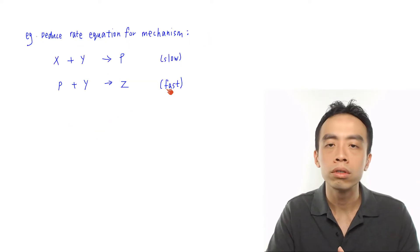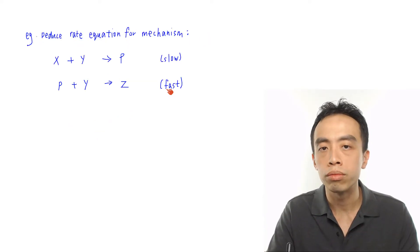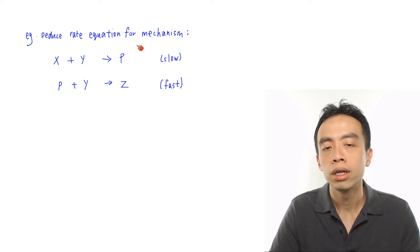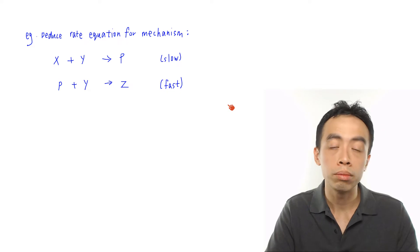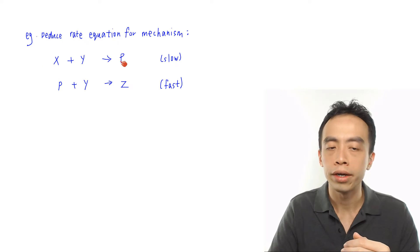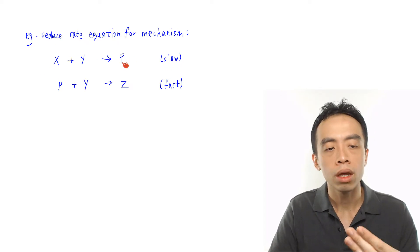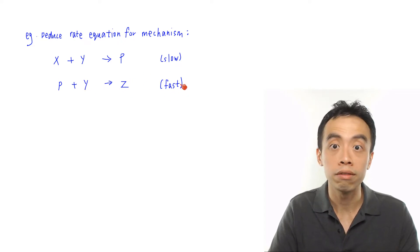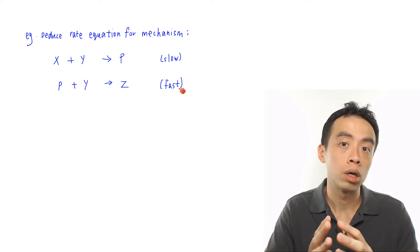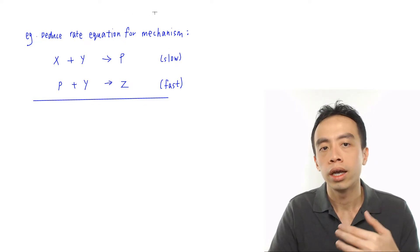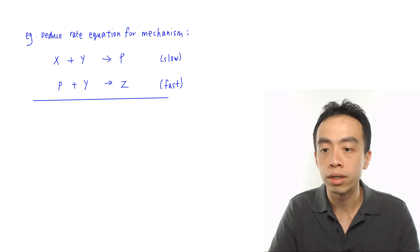Let's have two examples to illustrate the relationship between the rate equation and the reaction mechanism. Given the mechanism for this particular reaction, we want to determine the rate equation based on this mechanism. We have two steps: X plus Y gives P, and this is the slow step. The second step is P plus Y gives Z, which is the fast step. First, we can work out the overall reaction by adding up the two equations and cancelling common terms.